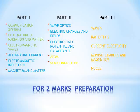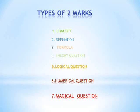Now we discuss the types of 2-mark questions. The types are: one — concept; two — definition; three — formula; four — theory questions; five — logical questions; six — numerical questions; seven — magical questions, which come from additional questions or any 2-mark questions derived from 8-mark or 4-mark content; and eight — difficult problems, which are the deciding factor for a student to get 60 out of 60.